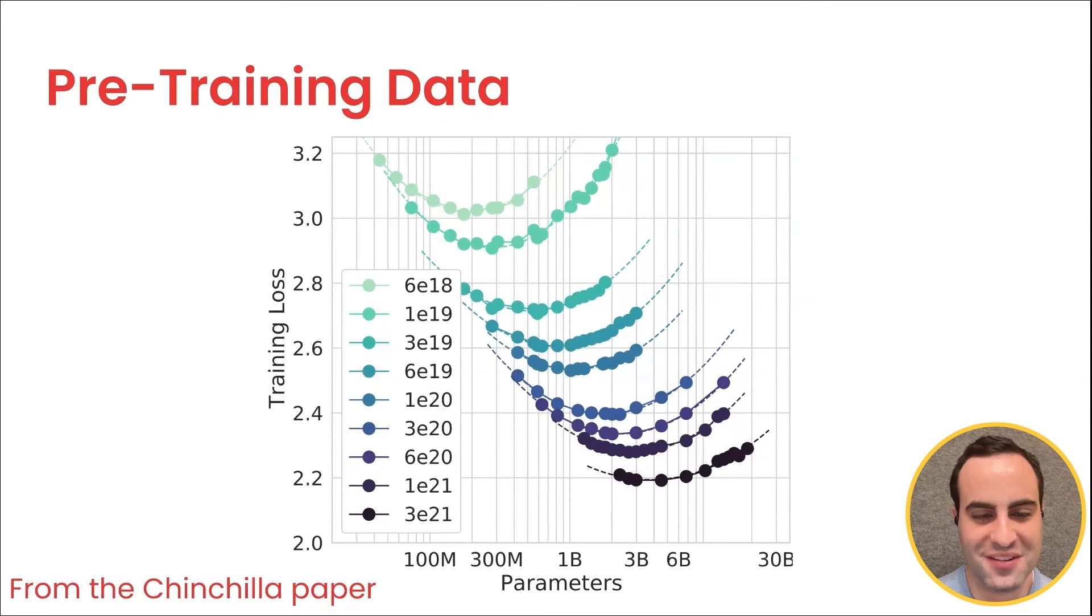You can see, for example, again tracing that 3 billion parameter model, looking at that vertical line up and down, that as you increase the budget from the top curve where it overlaps, which is 6e19, all the way down to that bottom curve, you're getting better and better loss as you increase your budget. That makes sense, right? You spend more.